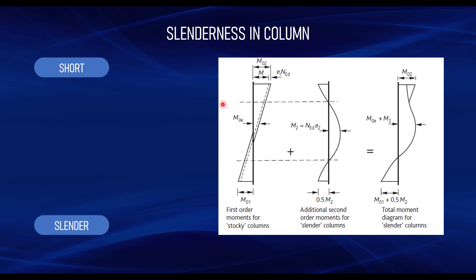Due to the slenderness of the column, there is an additional moment generated by the structural deformation of the column — this is the second order moment. When designing a slender column you have to consider both the first order moment and the second order moment. The Eurocode recommends that when the second order moment is less than 10% of the first order moment, you can ignore it. Therefore, the key difference between designing a short column and a slender column is that the slender column has this additional second order moment.